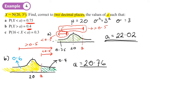Again, A is above 20, which we're expecting. What would happen if I put the wrong area in? If I put an area of 0.4, I get a value less than 20, which can't be right — the calculator is interpreting 0.4 as the area from the left-hand tail. So this is where diagrams are really important.